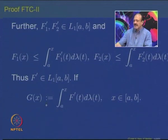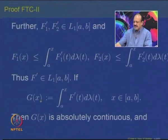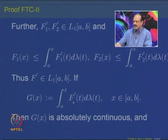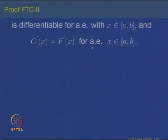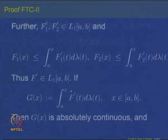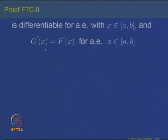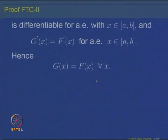Note that G(x) is absolutely continuous as the indefinite integral of an integrable function, and by FTC Part 1, G'(x) = F'(x) for almost all x. Therefore, the derivative of [F(x) − G(x)] equals zero almost everywhere, and F − G is absolutely continuous. By the lemma, F(x) − G(x) must be a constant, implying G(x) = F(x) − F(a). This completes the proof of the fundamental theorem of calculus Part 2.